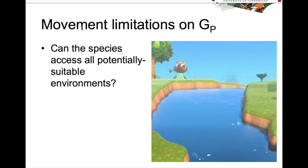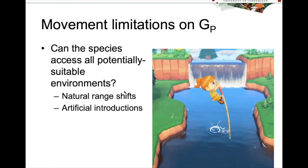You also have to remember movement limitations on GP. So can the species access all potentially suitable environments? So once you've projected your model or transferred your model into a particular geographic space, you still have to ask the question whether or not that species can get there. So say there's a river and you've projected your model to both sides of that river. Can the species actually access those habitats? And it's entirely possible that there may be natural range shifts or artificial introductions, but this is an important thing to consider when you're interpreting your model results.